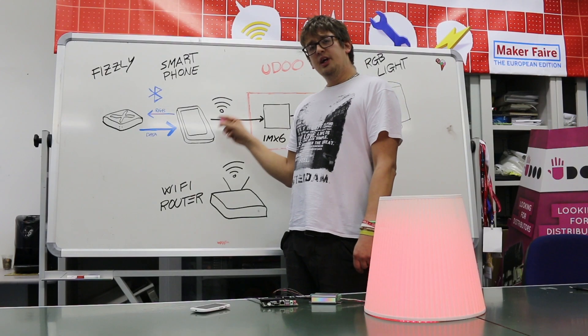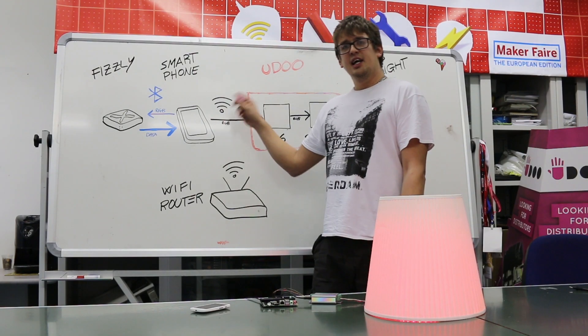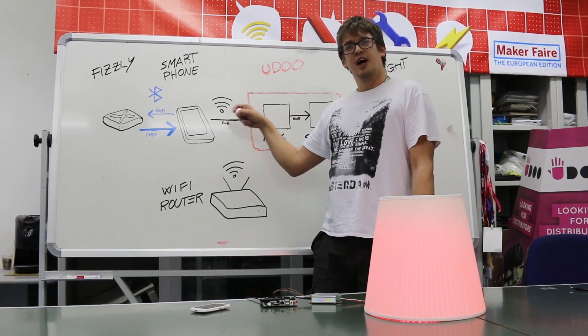First of all we connect Fizzly to our smartphone. Then Fizzly starts to read sensor values and send it to the smartphone. The application running on the smartphone detects movements and changes its angle values.